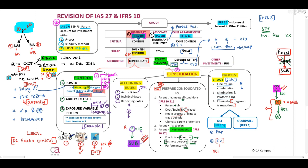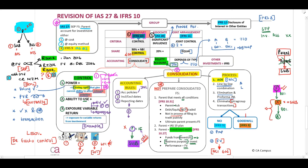If NCI is measured at fair value, our NCI will share in the goodwill — you need to know this, it is important. We will discuss goodwill in IFRS 3. What you need to know is that goodwill must be tested for impairment annually in terms of IFRS 3.6. And if we impair our goodwill, we may not reverse that impairment.